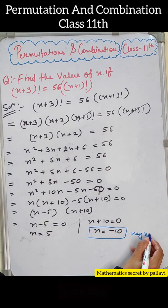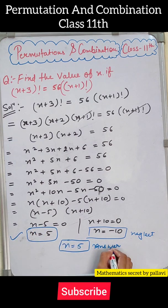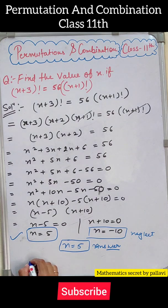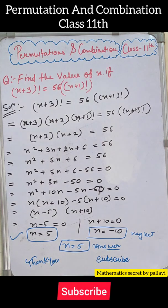From this we get n = 5 or n = -10. We neglect -10, and 5 is our answer. So n = 5. I hope you understood the question. Thank you for watching my video. Subscribe please.